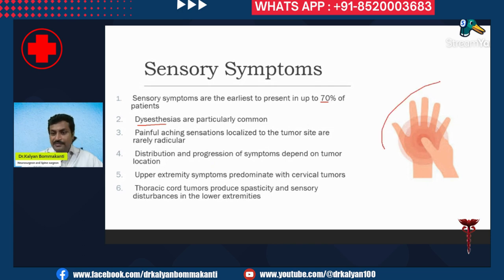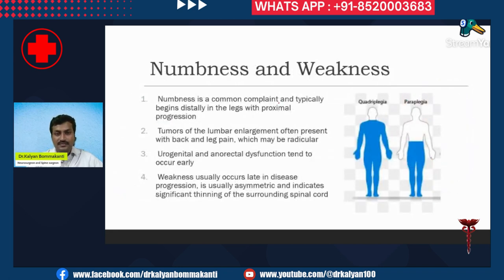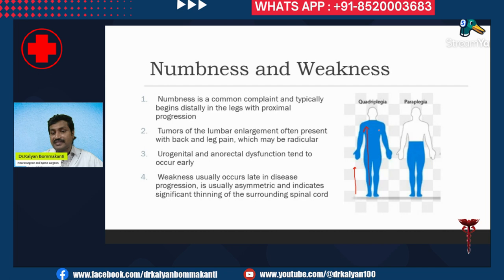Upper extremity symptoms predominate with cervical tumors, whereas thoracic cord tumors produce disturbances in the lower limb — the hands, neck, and head are not affected, only the lower abdomen and legs are involved. Numbness is a common complaint and typically begins distally in the legs and progresses proximally. Weakness, by contrast, is more common in the upper limbs and hands. So sensory loss is more prominent in the legs, whereas weakness is more prominent in the hands.